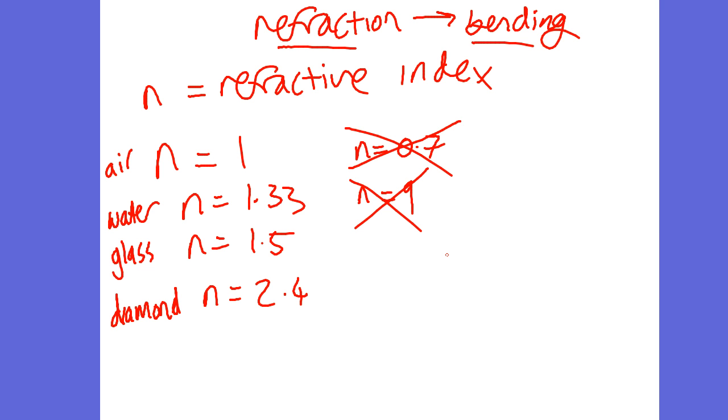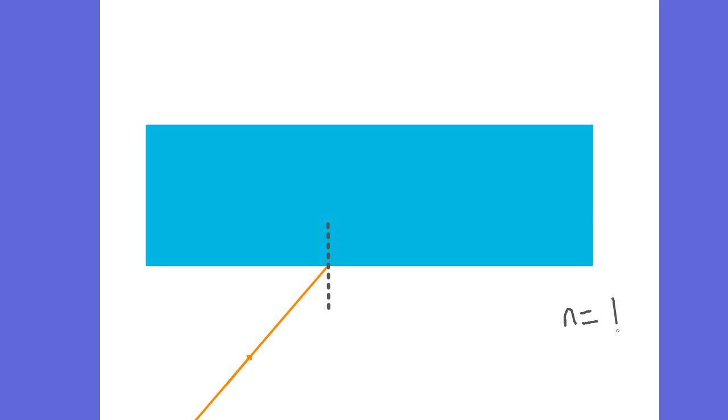Refraction is the bending of light. Here we've got light coming into a glass block — so we've gone from air, with a refractive index of 1, into glass, with a refractive index of 1.5. The first thing to draw is a normal line at 90 degrees to the surface. When light goes from a low refractive index to a higher refractive index, it bends towards the normal.